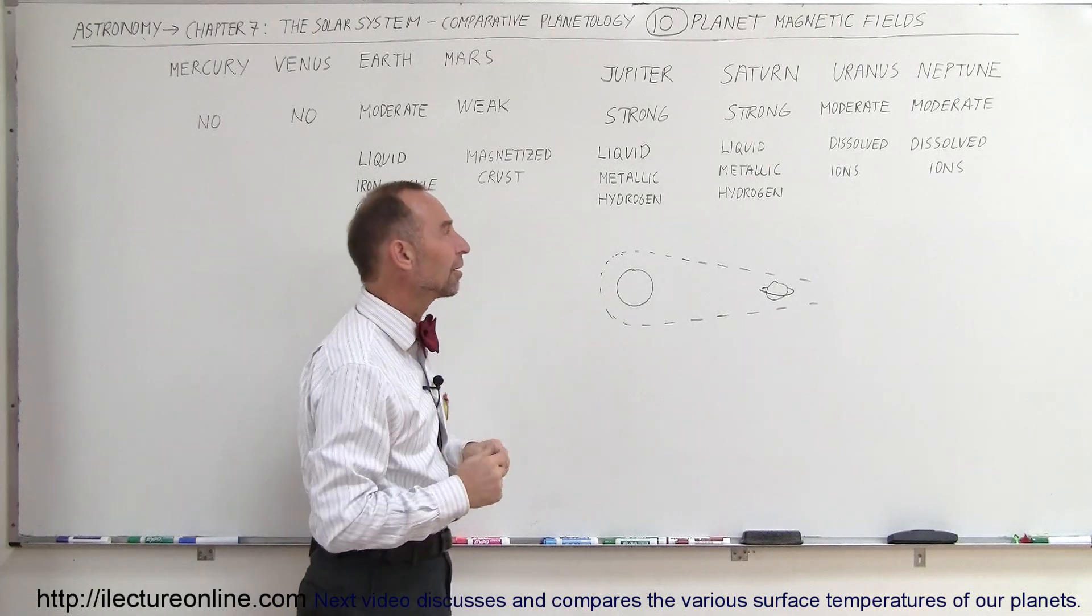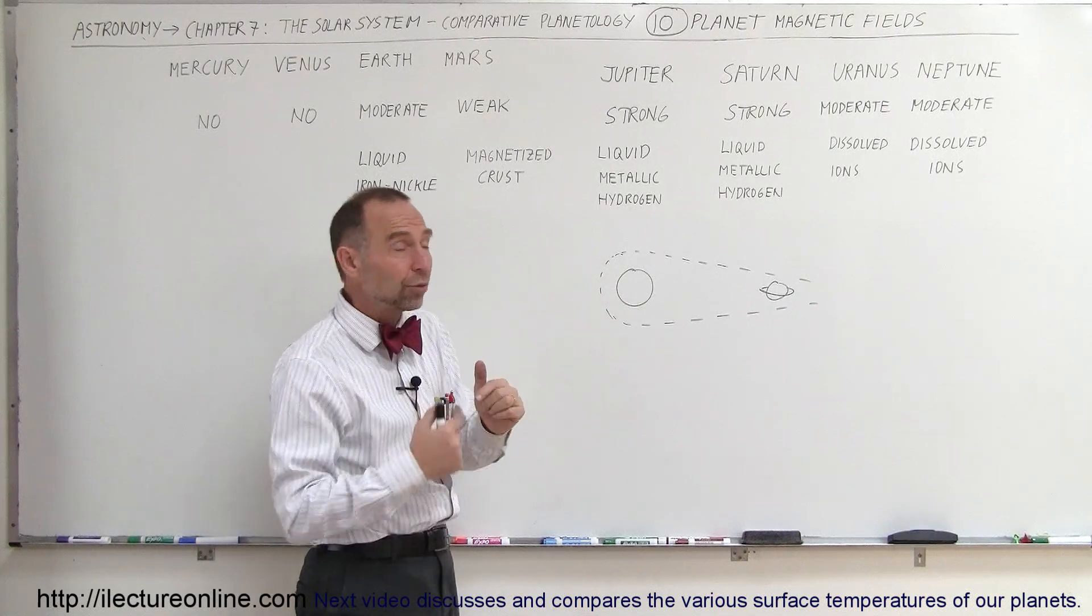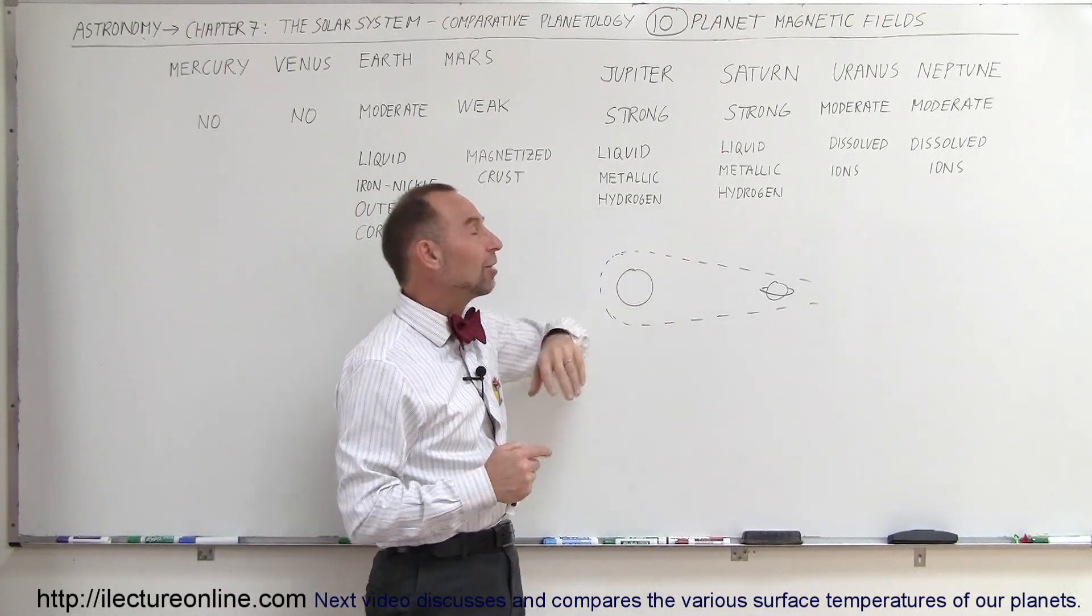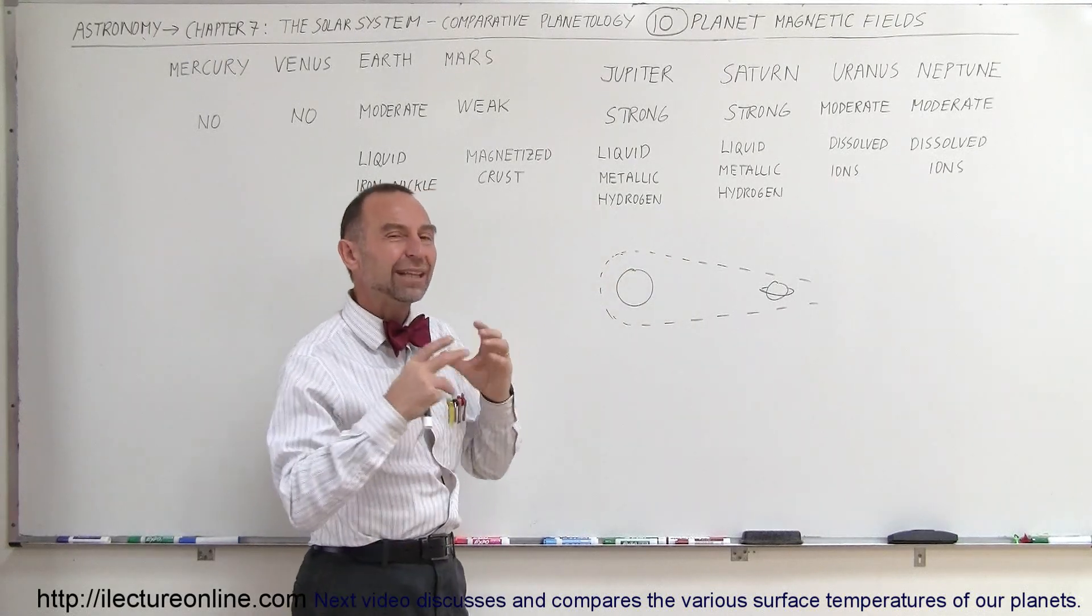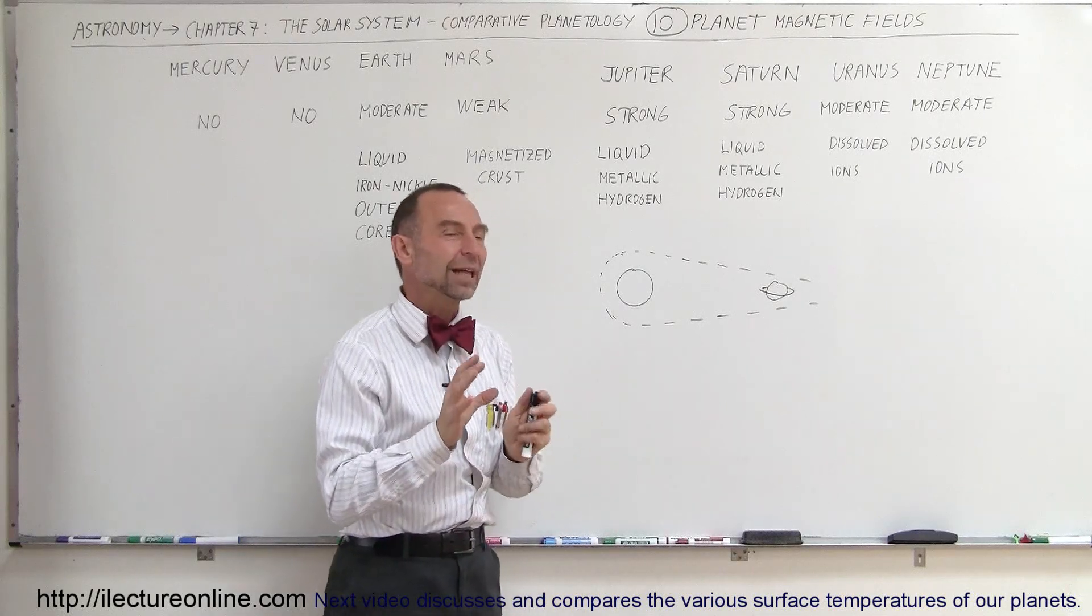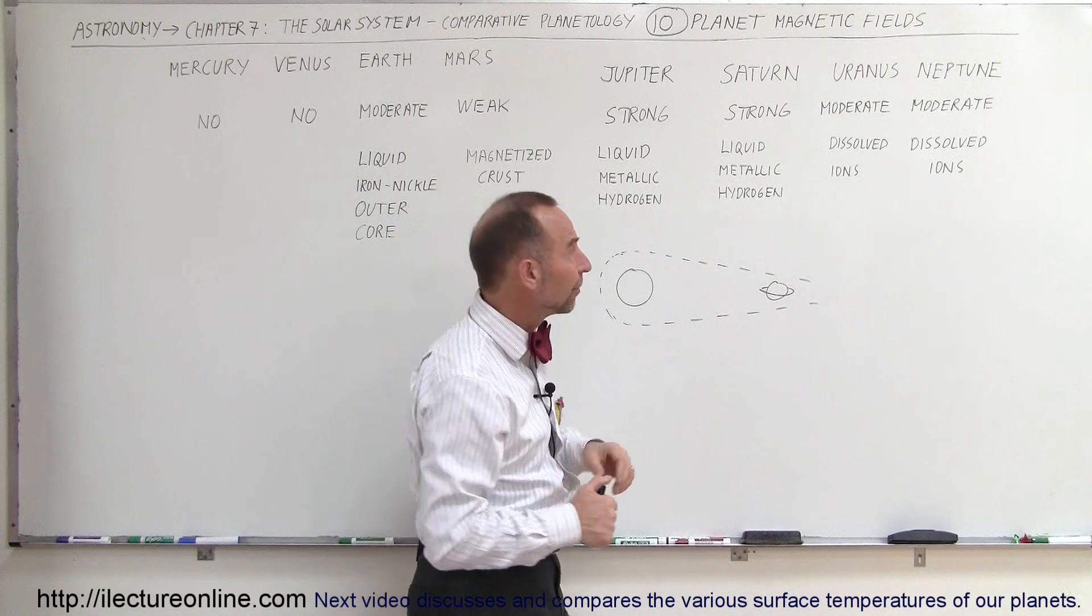Saturn, being a smaller planet, it also has a very rapid rotation. Matter of fact, Saturn has even a more rapid rotation on its axis than Jupiter, but it being smaller, it therefore has a smaller region with liquid metallic hydrogen, and therefore the magnetic field of Saturn is a little bit smaller than the magnetic field of Jupiter.